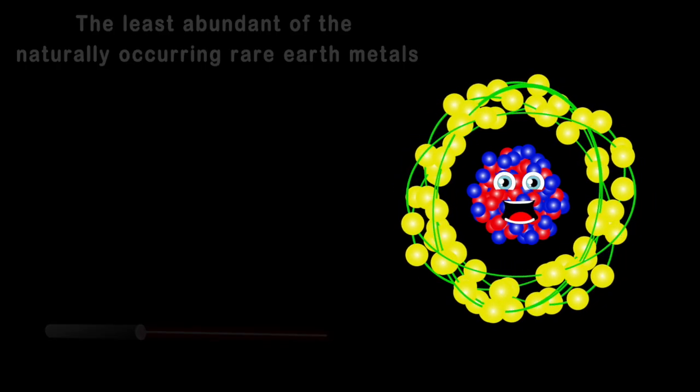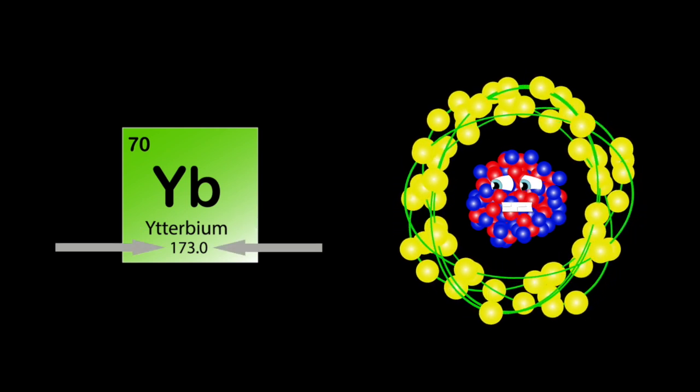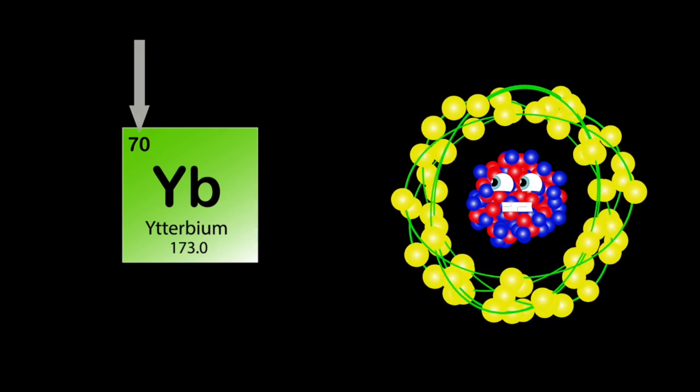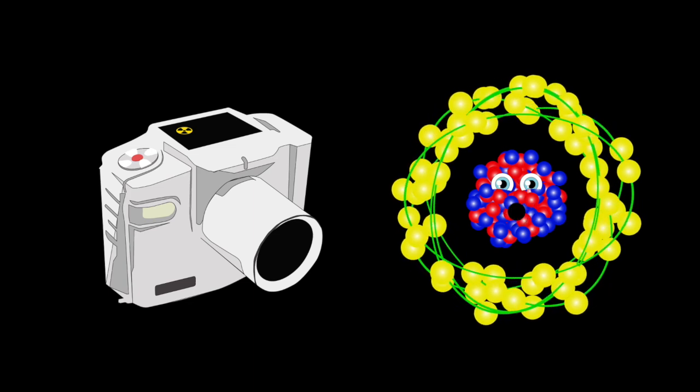I'm ytterbium, my atomic mass is 173, my symbol's YB, my atomic number's 70. I have one isotope that may be used as a radiation source, and a portable X-ray if approved.